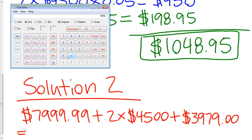Well, I have $7,999.99 plus 2 times $4,500. Now make sure that you're using a scientific calculator if you're going to punch it in like that, because a scientific calculator knows the order of operations. Otherwise, you're going to have to calculate this value here first. And then we're going to add $3,979. So our total sales here for William, we have $20,978.99.